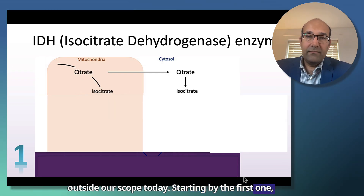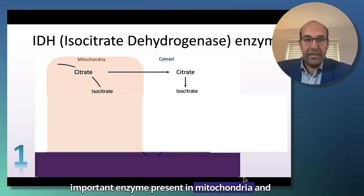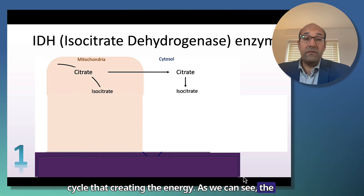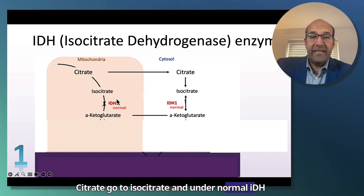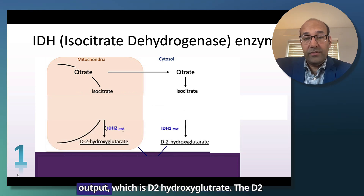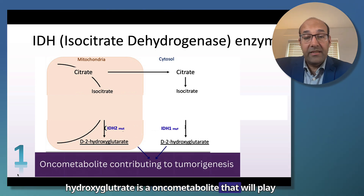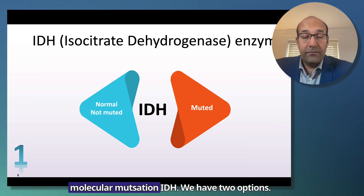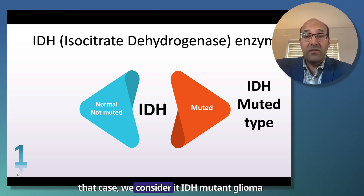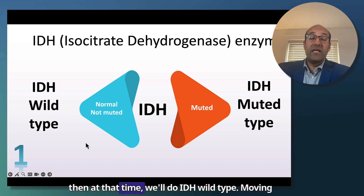Starting with the first one — the heart of the molecular mutations in gliomas. Isocitrate dehydrogenase enzyme is an important enzyme present in mitochondria and cytoplasm, playing an essential role in the Krebs cycle that creates energy. As we can see, citrate goes to isocitrate, and under normal IDH enzyme activity we get alpha-ketoglutarate. But in the case of mutations, we get a different output: D-2-hydroxyglutarate — the main oncometabolite that plays a significant role in tumorigenesis. For IDH molecular mutations, we have two scenarios: the IDH is mutated, so we consider it IDH mutant glioma; or it's normal and not mutated, and then we use the term IDH wild type.